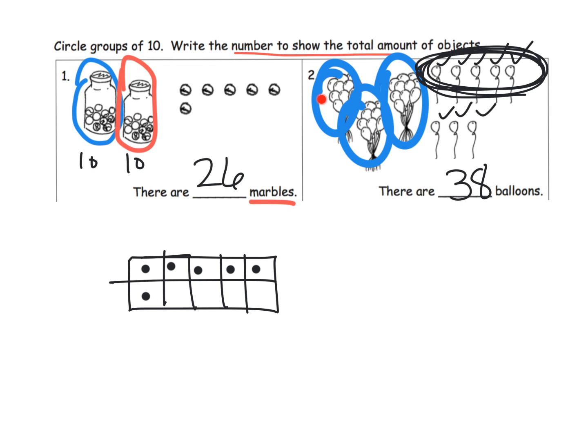So we have 38 balloons. Once again, for your differentiation you can see that this is a group of five. So some of your students may even say 10, 20, 30 and immediately jump to 35 and then 36, 37, 38.